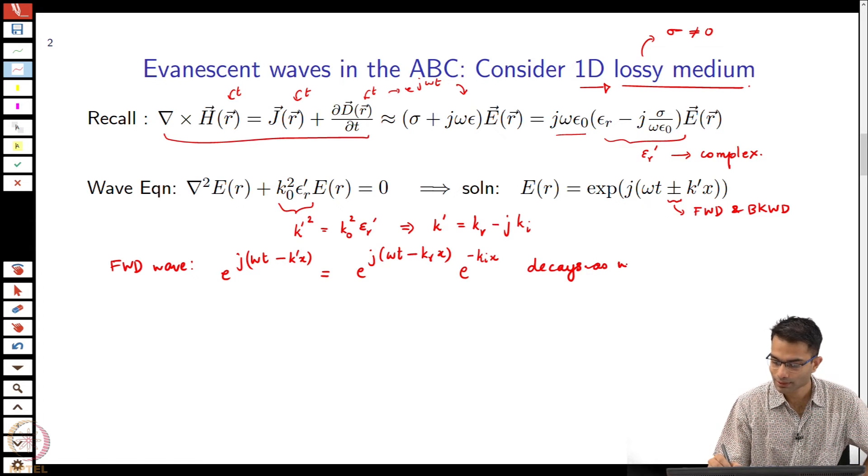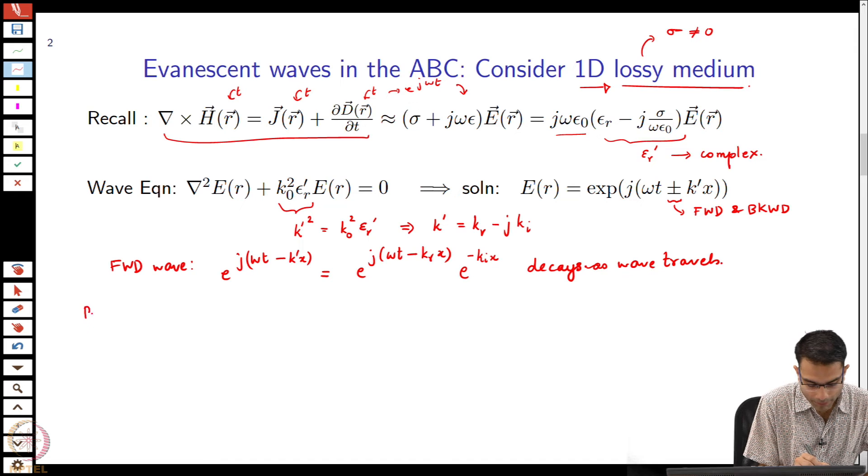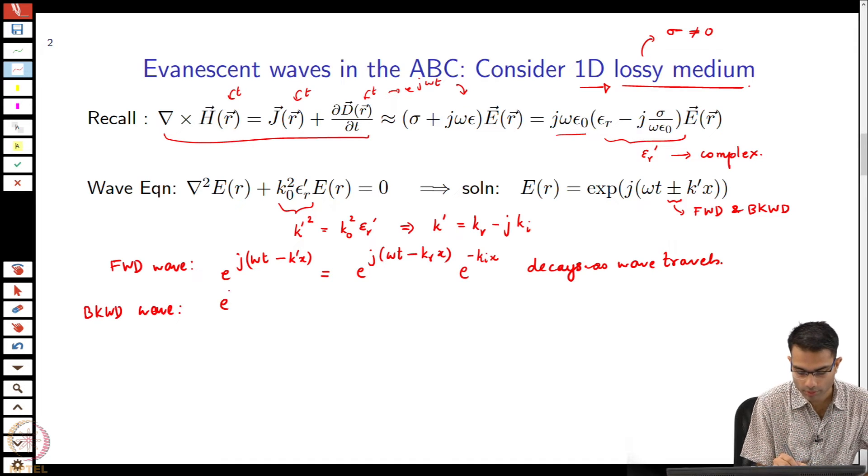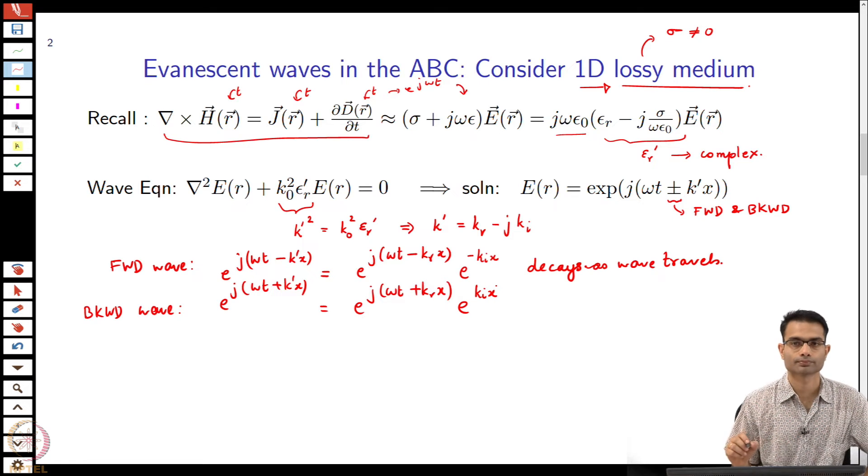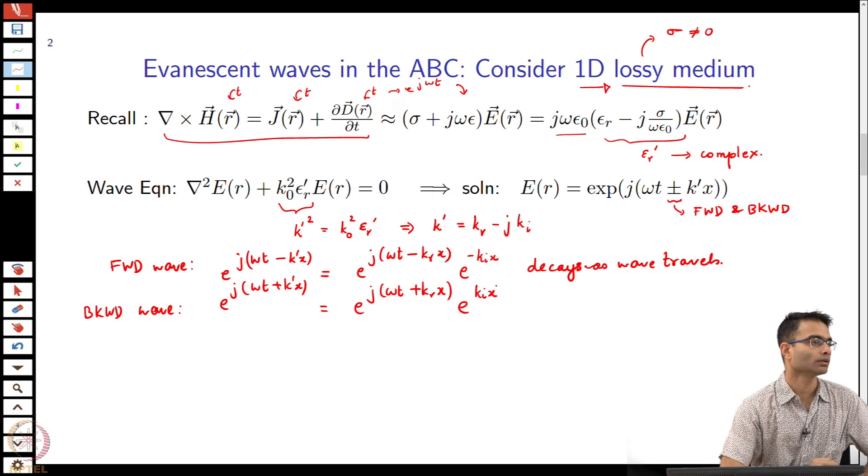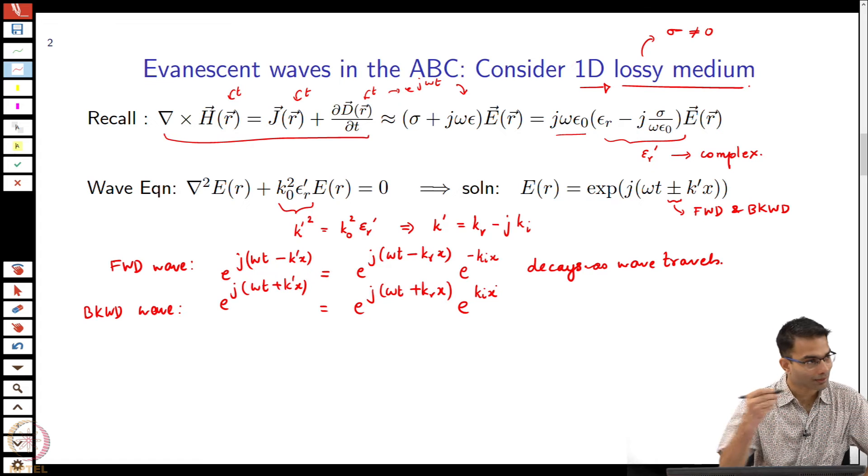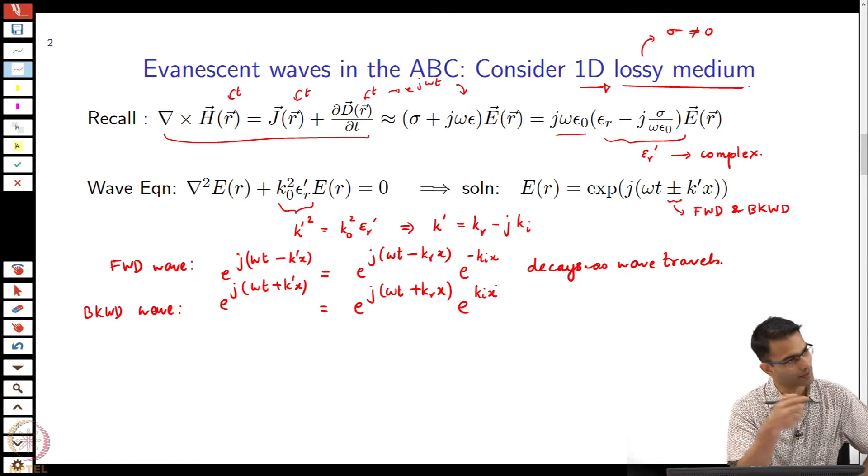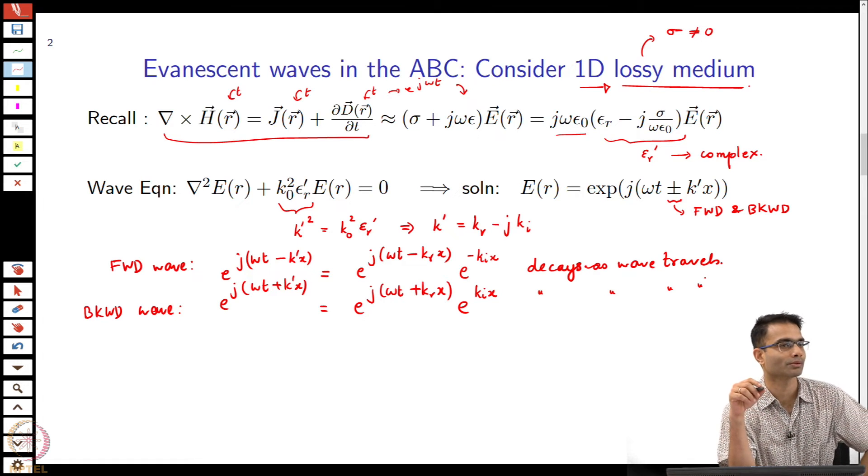And the backward wave has plus k prime x. Does this wave decay? It had better decay. It is decaying. Which direction is this wave travelling? It is travelling in the minus x direction, so x is decreasing over here. So this wave will also decay as it travels. Always check that you are getting a physically meaningful solution.